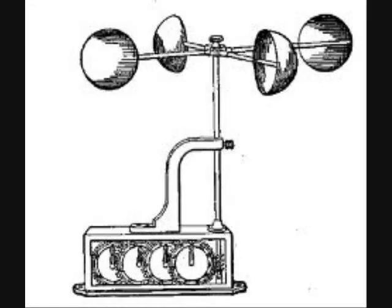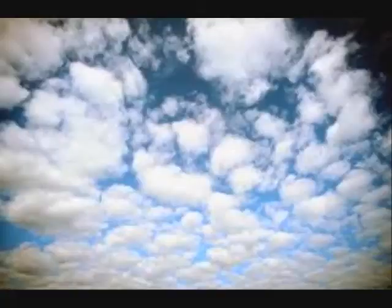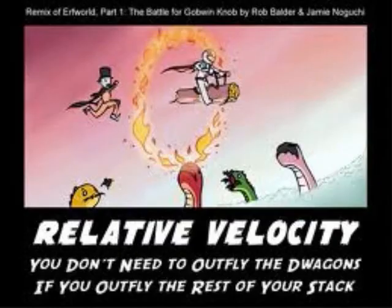The relative velocity of the discus is the sum of the velocity of the wind and the discus through the air. Therefore, if there is no wind, then the relative velocity will be equivalent to the observed velocity.